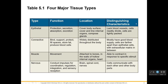Epithelial tissue covers and lines — it's always on the surface of things. It has no blood vessels but does divide quickly to replenish itself. It's for protection, secretion, absorption, and excretion. Connective tissue binds, supports, protects, fills spaces, connects other tissues, can store fat, and produce blood cells. It's the most widely distributed tissue in the body. Most connective tissue has a good blood supply — and the moral is, if you have blood supply nearby, you heal well; if you lack it, healing is slow.